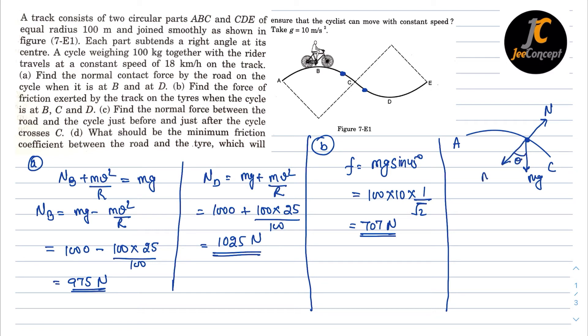So if this is theta, so MG cos theta will act in this direction and MV square by R will act radially outward. So N in this particular case is going to be MG cos theta minus MV square by R. Whereas in part C to E, the MV square by R will act outward, N will act inward and the MG will act downward. This will be angle theta. So MG cos theta this time will act along outside with MV square by R.